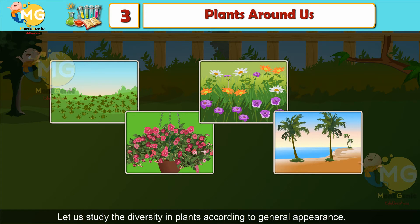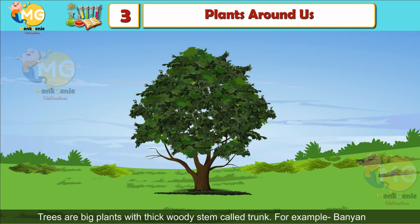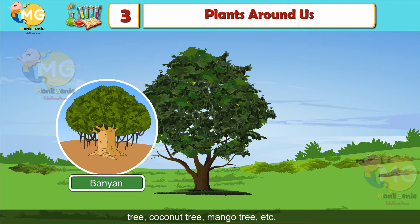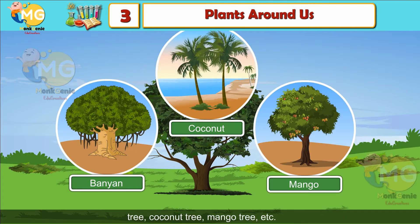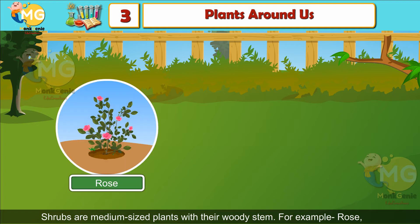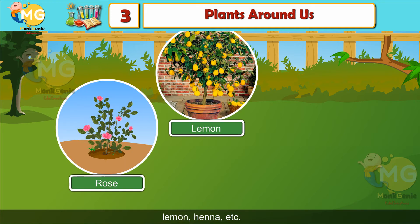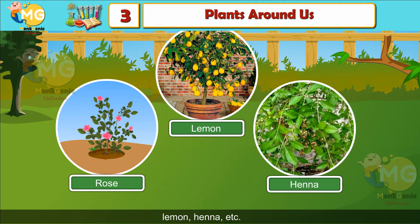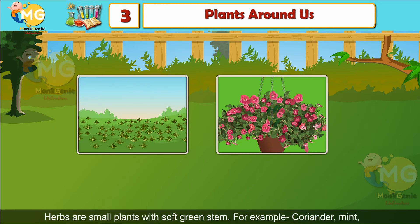According to general appearance, trees are big plants with a thick woody stem called a trunk. For example, banyan tree, coconut tree, mango tree, etc. Shrubs are medium-sized plants with a woody stem. For example, rose, lemon, henna, etc.